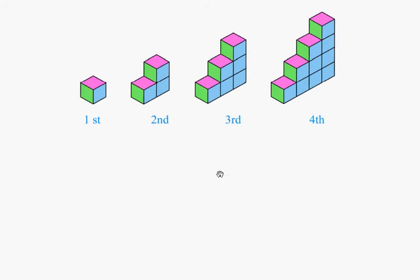In a similar manner, look at the green faces. The first one has one, the second one has two, the third one has three, the fourth one has four. Clearly, the hundredth term should have one hundred green faces on that side.